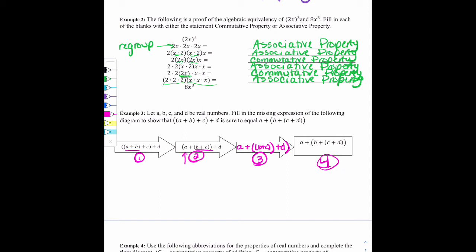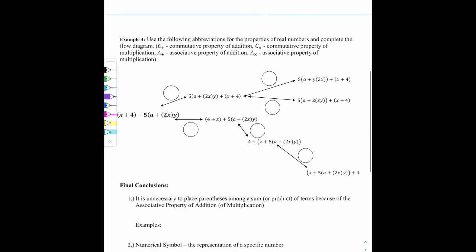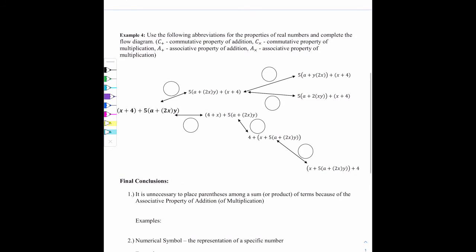So sometimes the proof will be done for you, but there'll be a missing piece that you need to fill in with what's missing. And then in our final example, example 4, this is an example of a proof through a diagram.